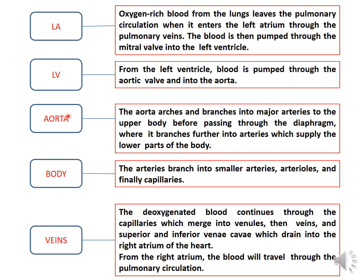The aorta then arches and branches into different arteries to supply the upper part of the body. It also further branches below the diaphragm into arteries to supply the lower parts of the body. So the aorta supplies both the upper and lower parts of the body.